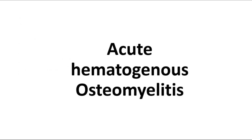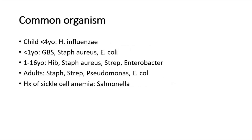First, I'll talk about acute hematogenous osteomyelitis. The common organisms are different for different age groups. The causative organism in both adults and children is usually Staphylococcus aureus, found in over 70% of cases. There are also other organisms such as Haemophilus influenzae in children less than four years old. However, the incidence has been much reduced after the introduction of H. influenzae type B vaccination.